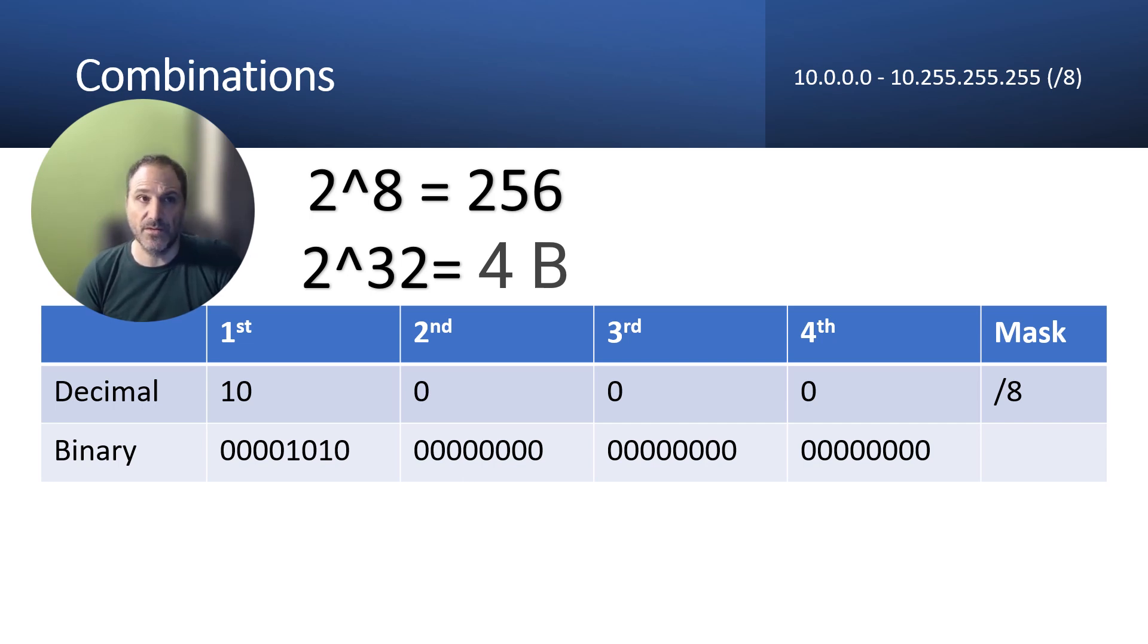If you consider all of the combinations using the four octets, so 32 bits, it will be over 4 billion combinations.